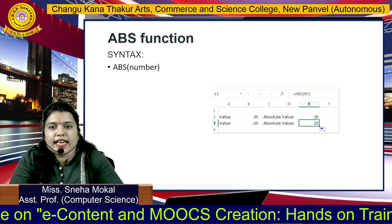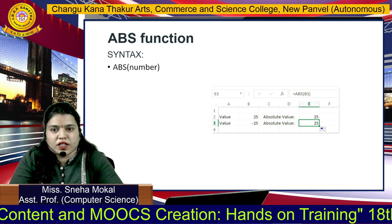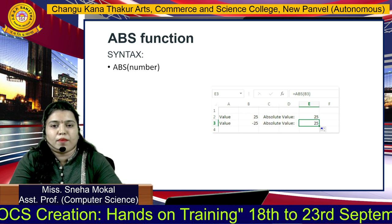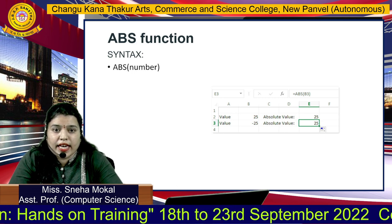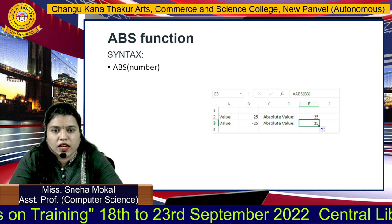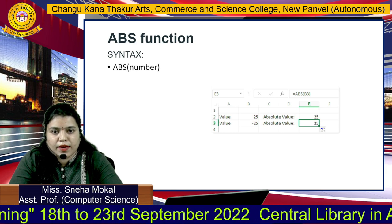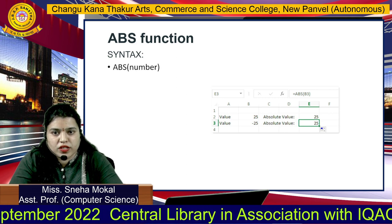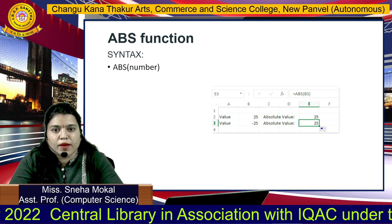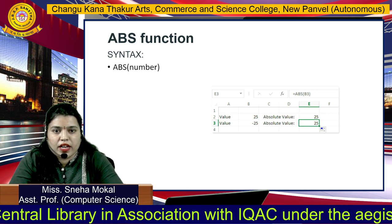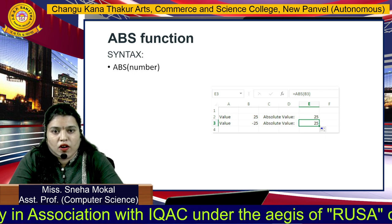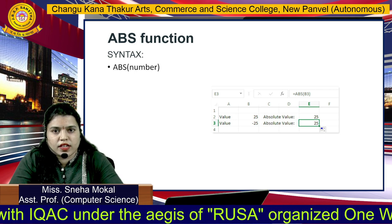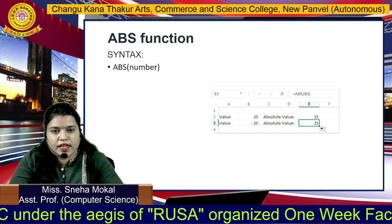Next है ABS function — ABS मतलब absolute value. जब आप उसमें number pass करोगे, अगर वो negative होगा — suppose minus 25 — तो जब आप absolute function use करोगे और उसमें minus 25 डालोगे, then it will give the value 25, because it only accepts positive numbers.